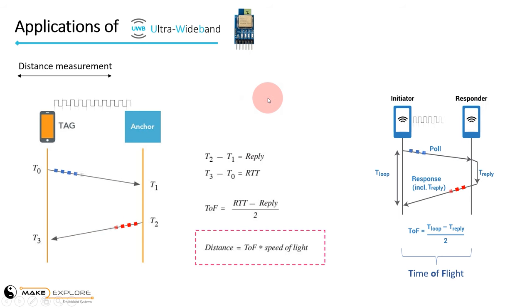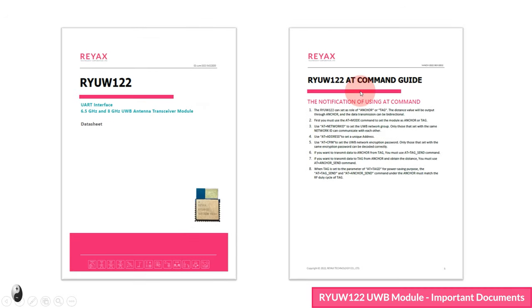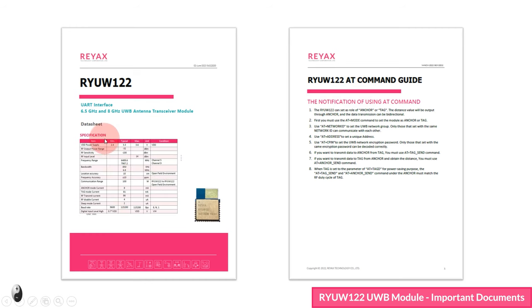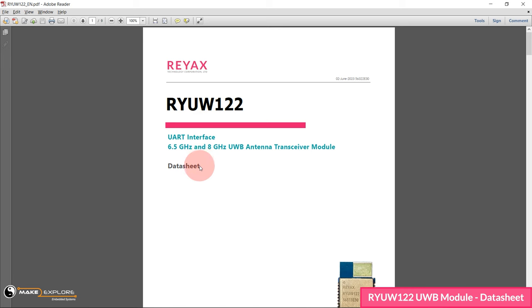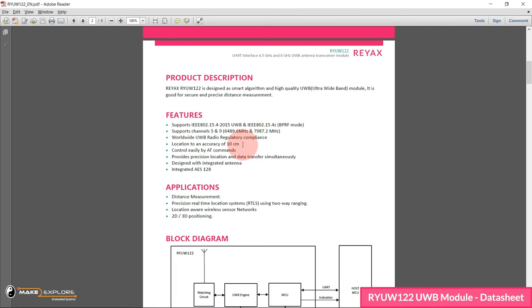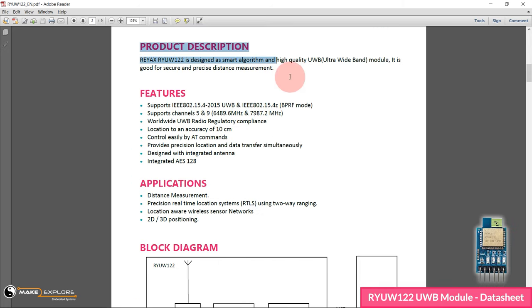Now let's see two important documents about this ultra-wideband transceiver module: the datasheet and AT commands guide. The datasheet gives details about features, pinout, electrical and mechanical characteristics, and specifications. The AT command guide explains how to configure the UWB module with various operating modes and how to use it for distance measurement. This is a 6.5 and 8 GHz antenna transceiver module featuring a UART interface. In the product description, it mentions this is a high-quality ultra-wideband module good for secure and precise distance measurement.